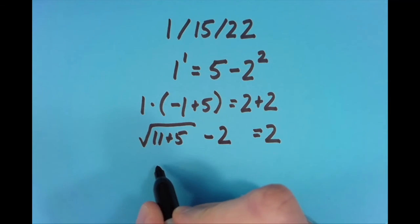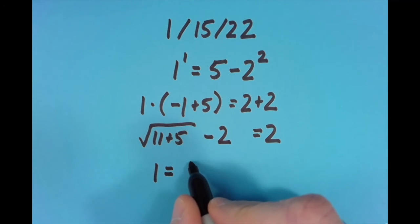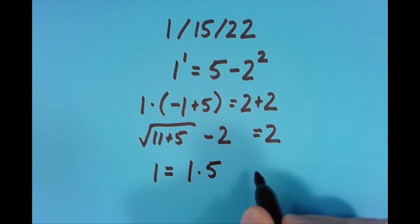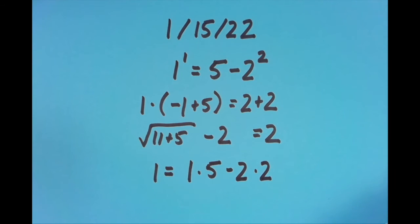And the last way I tried it was I put the equal sign in the first position, and I said 1 equals 1 times 5 minus 2 times 2. And because of the order of operations, we have this is 5 minus 4, which is equal to 1.